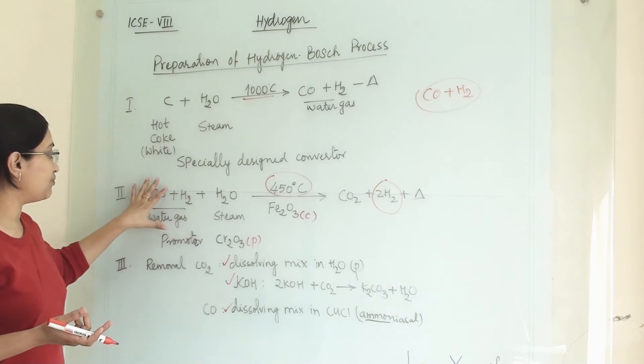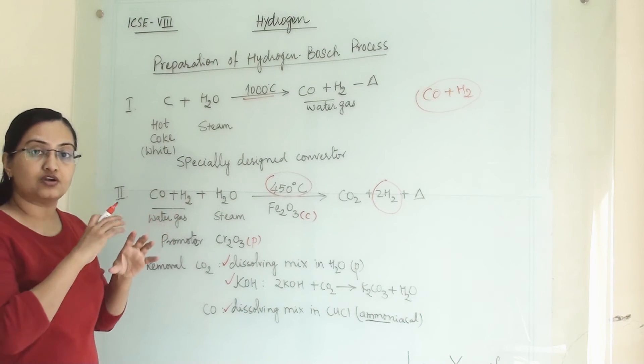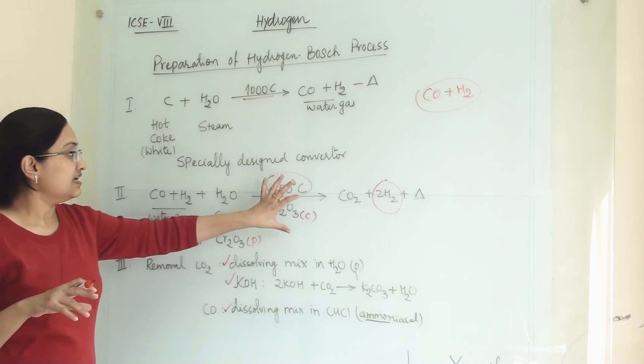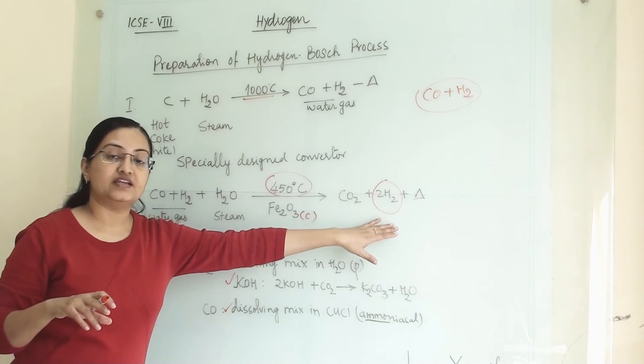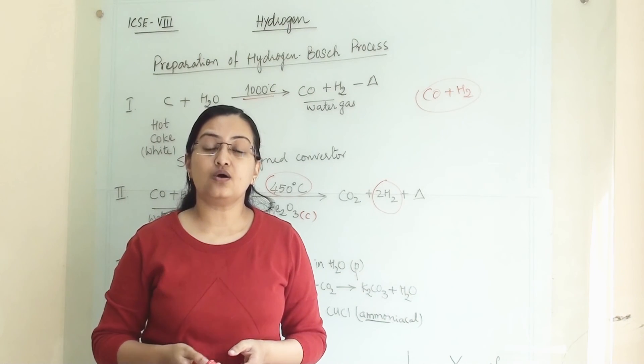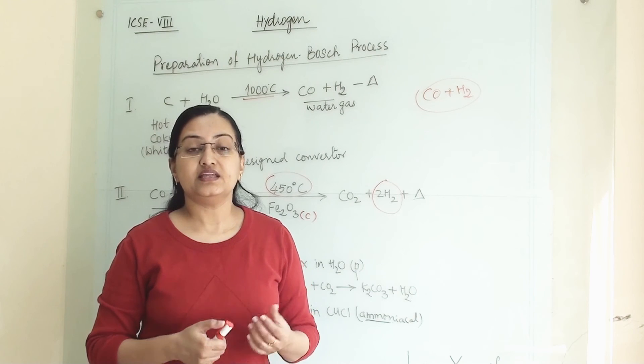And in second step, when water gas is reacting with steam, when water gas is passing through steam, then it will give us carbon dioxide and hydrogen. So this is how we can manufacture hydrogen gas via Bosch process.